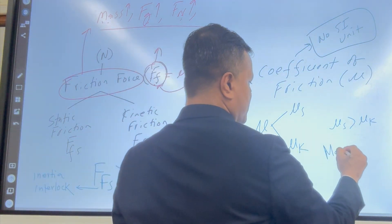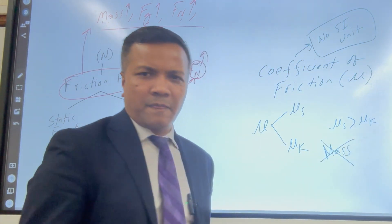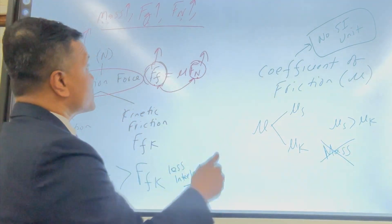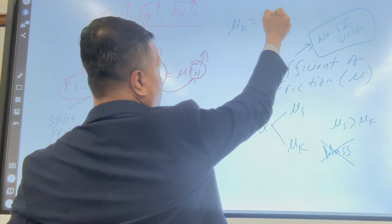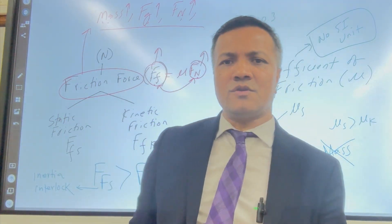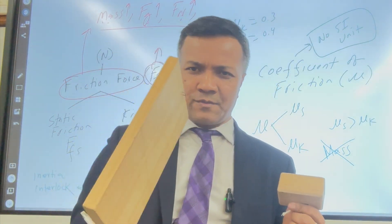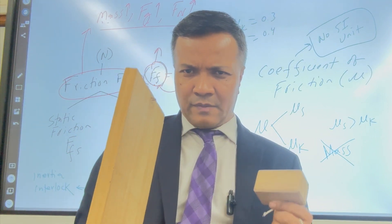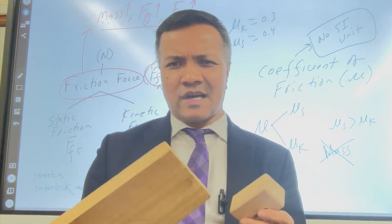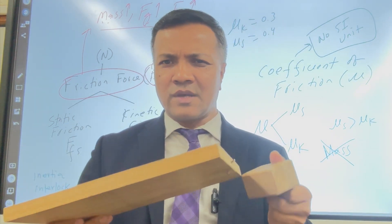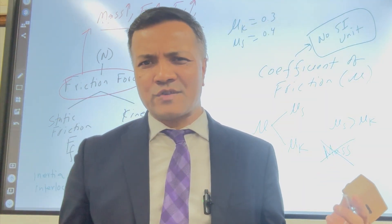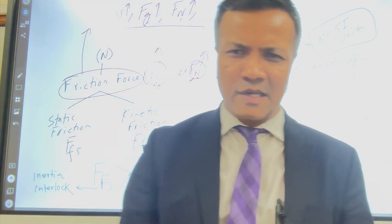The coefficient of friction does not depend on mass or size. Even if I take a bigger object, the coefficient of friction stays the same. For example, μ_k = 0.3 and μ_s = 0.4 regardless of the size or mass of the object. Changing the mass does not give you a different coefficient of friction.